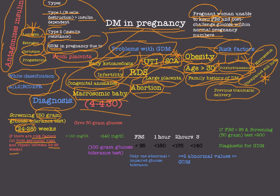To perform the 50-gram glucose test, we give the patient 50 grams of glucose and then check blood glucose. If the result is below 140 mg/dL, there is no DM. If it is 140 mg/dL or above, we proceed to the 100-gram glucose tolerance test.